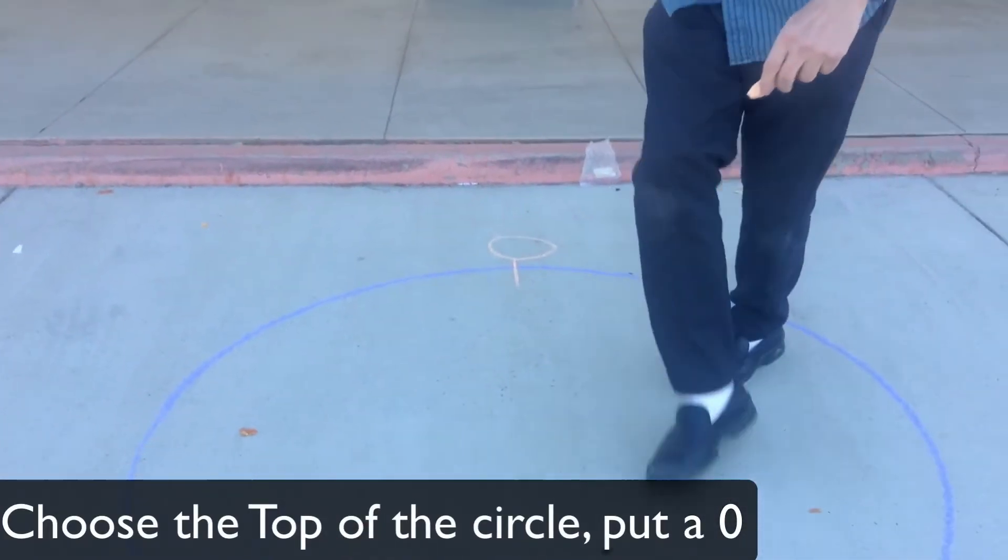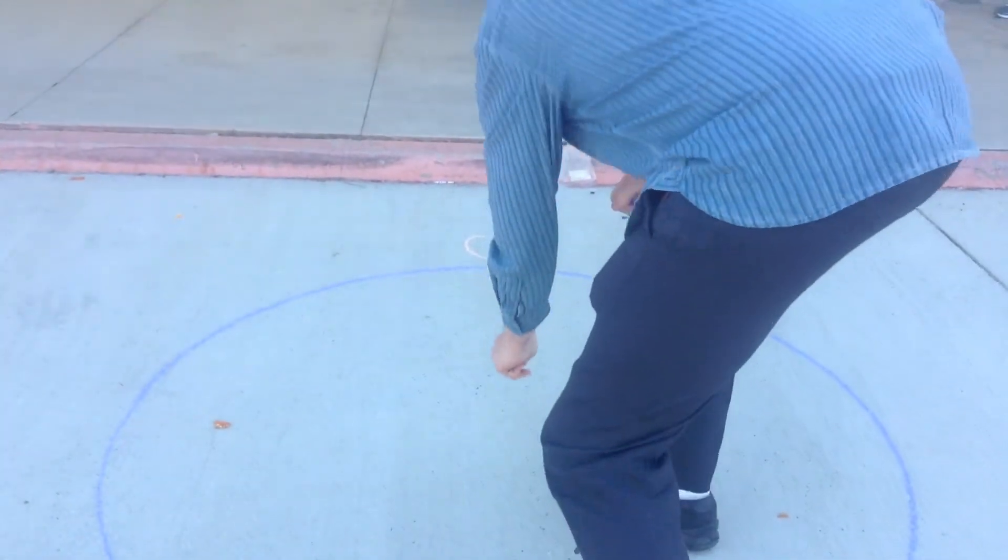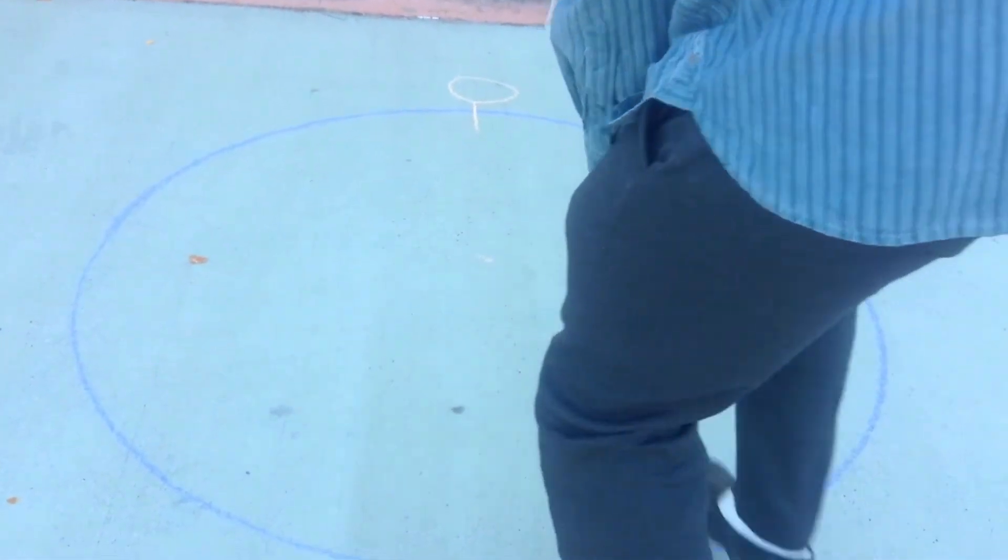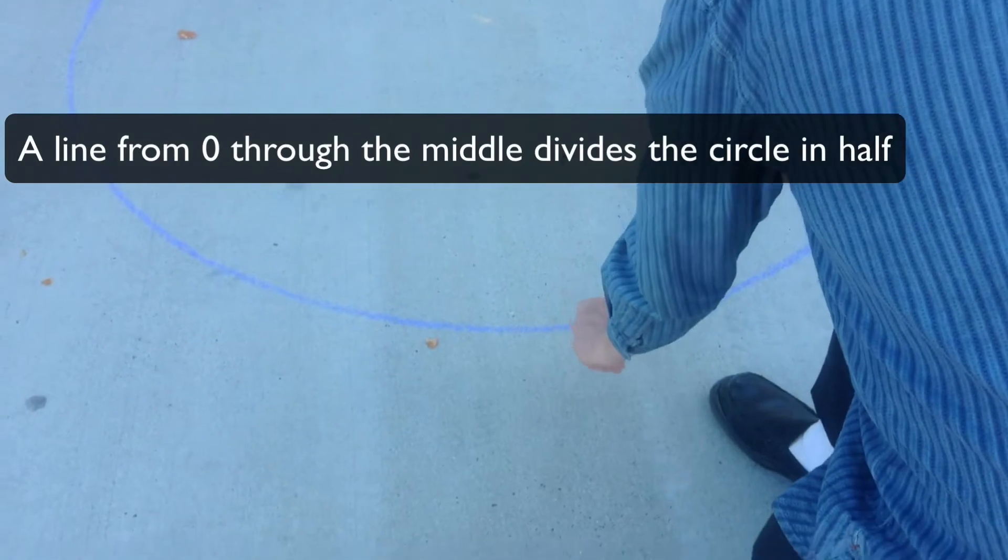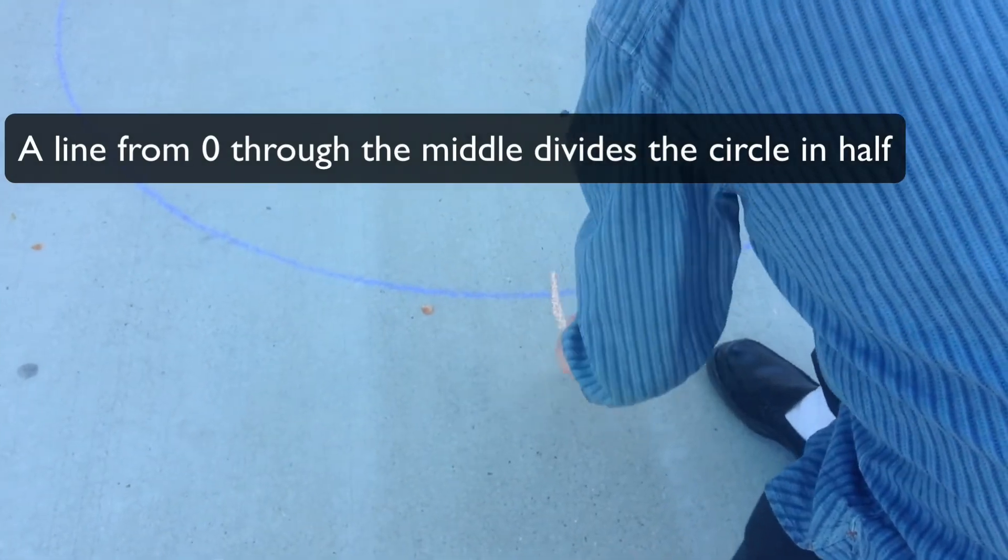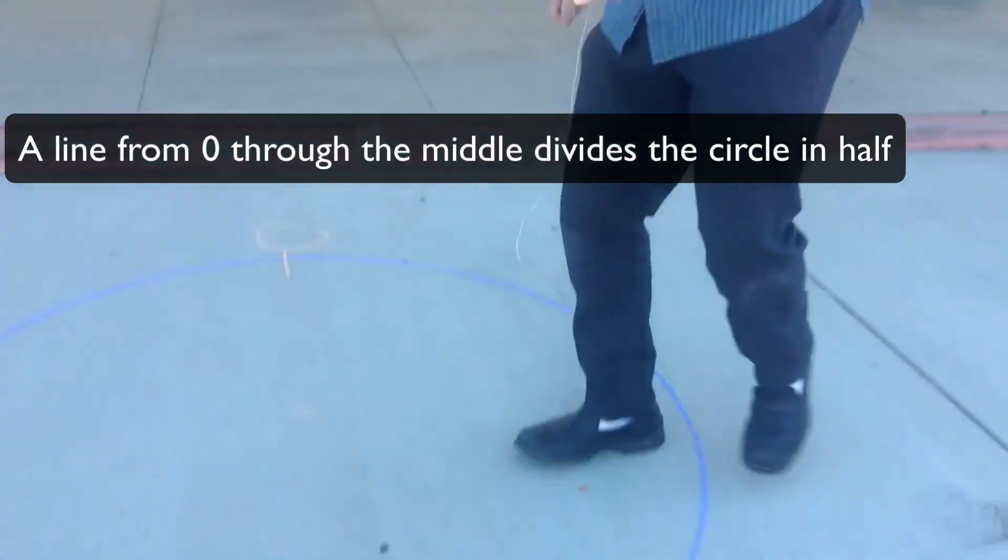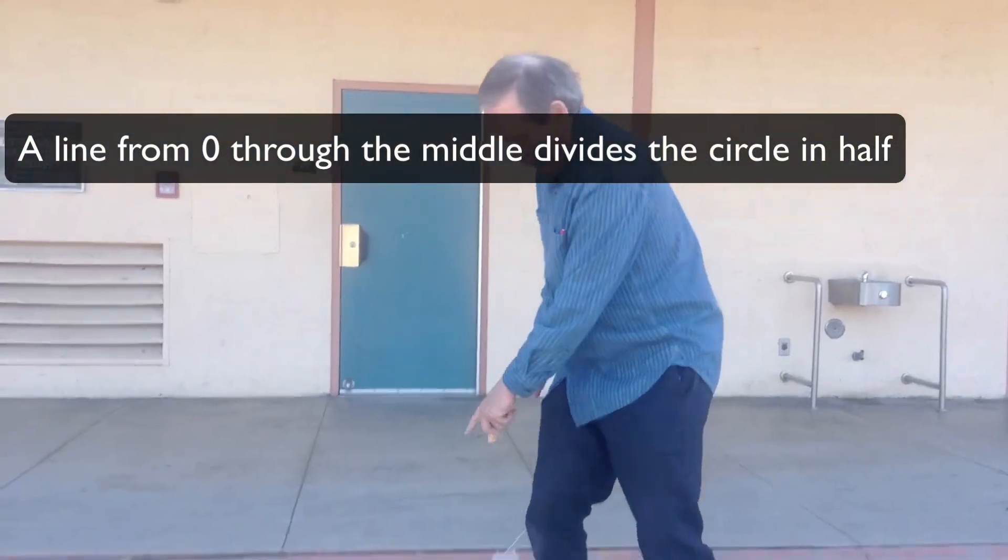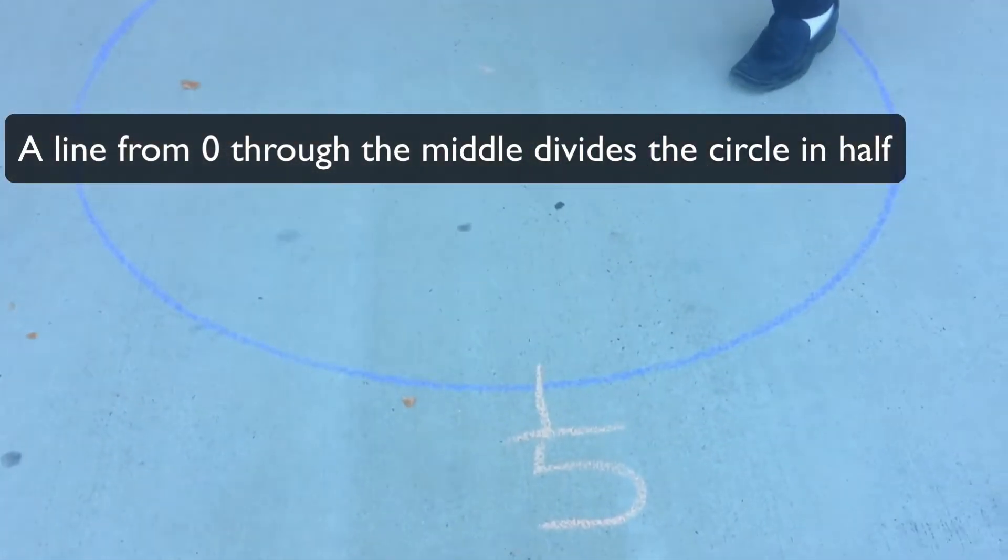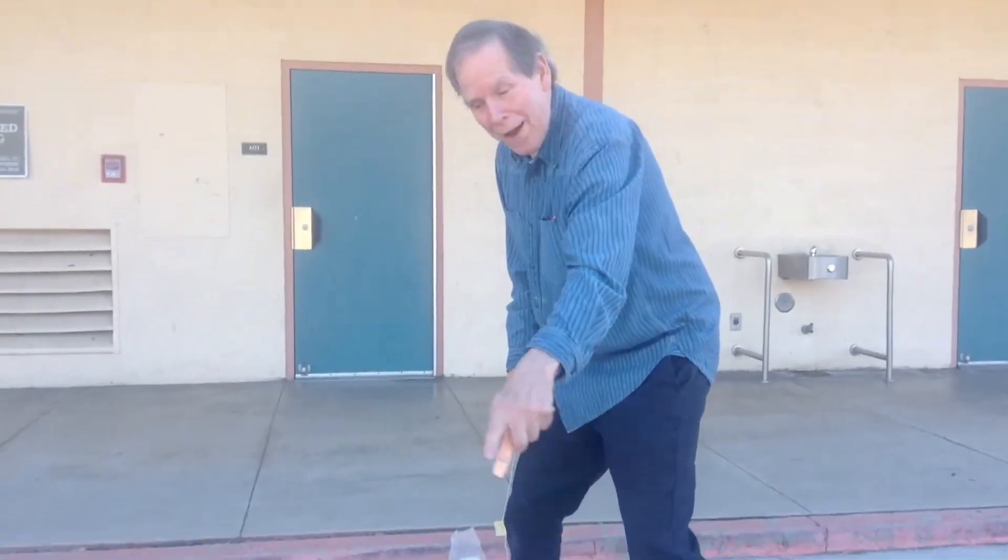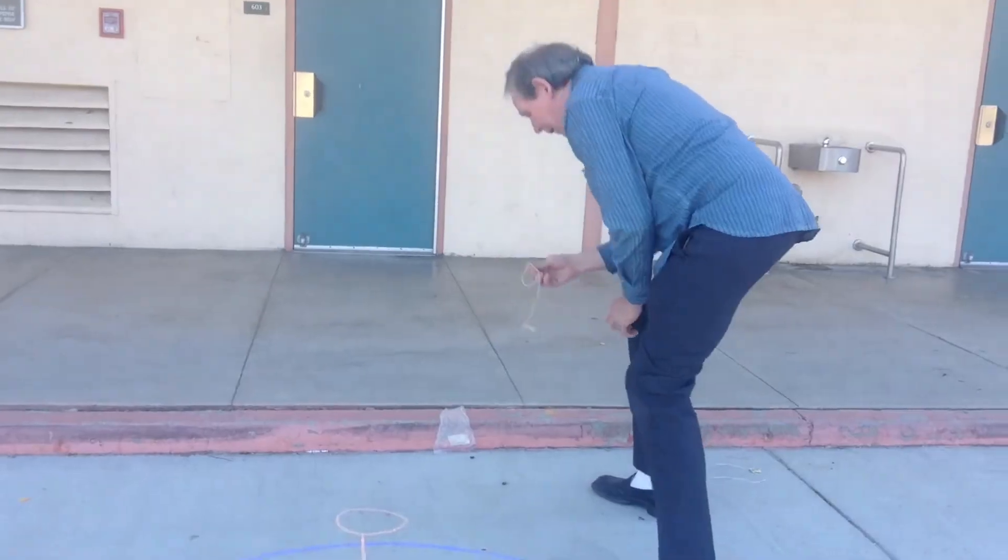And that's zero. I should have marked my middle. But the exact opposite of that is the bottom, and that's five. So we have zero and five. Halfway around is five. All the way around is zero. I've got another string.